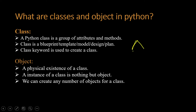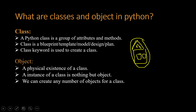A Python class contains attributes and methods. The class is a blueprint, template, model, or design plan. You see here — I create one blueprint, and this blueprint represents the house. So this blueprint is the class, and the class keyword is used to create a class.